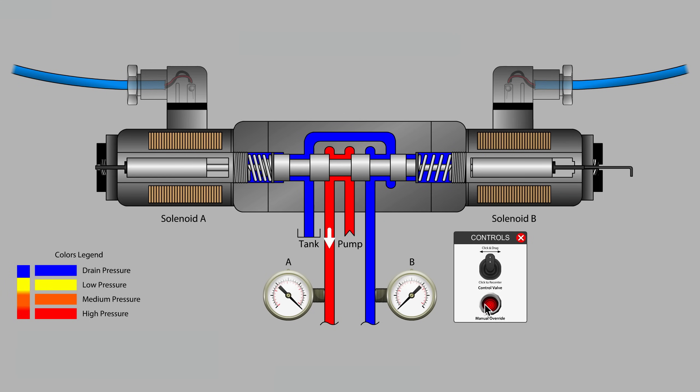Pushing on the mechanical override is a simple way to find out if the internal parts of the valve, namely the valve spool, is still free to move and operating normally. Make sure that when you push the mechanical override that no solenoid is still energized, especially the solenoid on the opposite side.